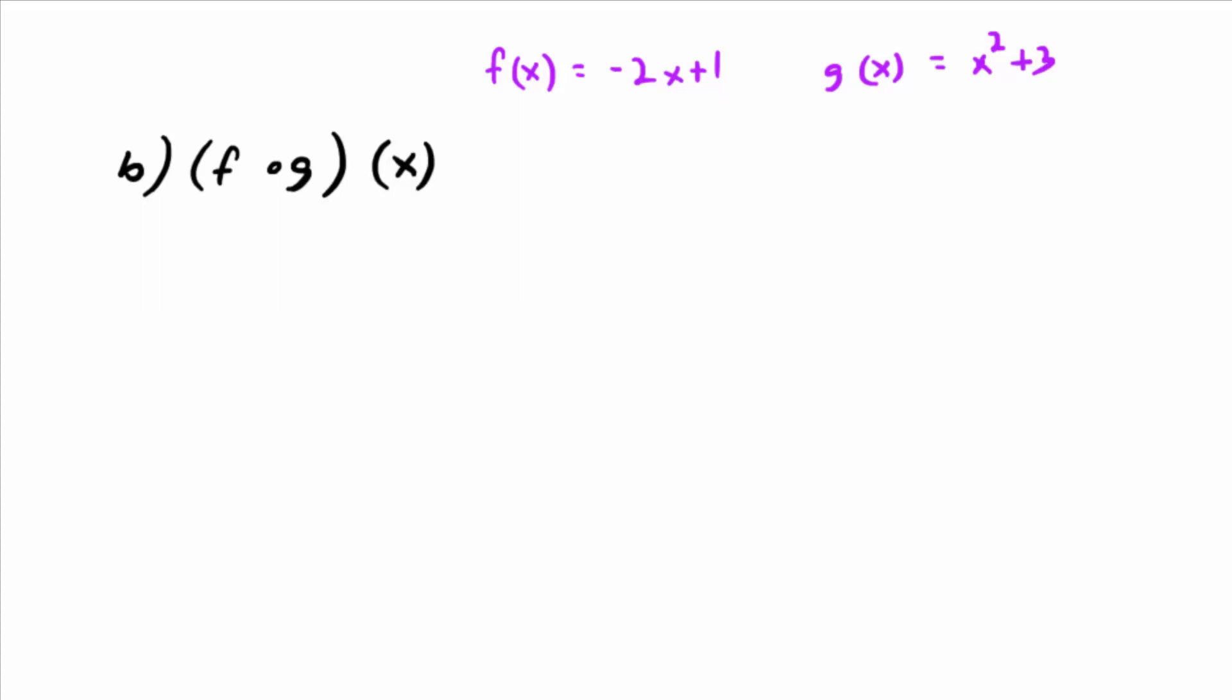So, f composed with g of x. Right away, what could you replace that notation with? By definition, f composed with g of x is what? F of g of x. So, this is just function notation. When you write f of g of x, that's just function notation. And it's telling you that the input into f is now g of x, the formula for g of x, if there is a formula.